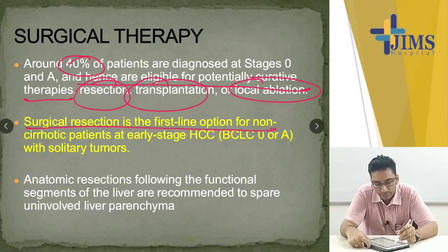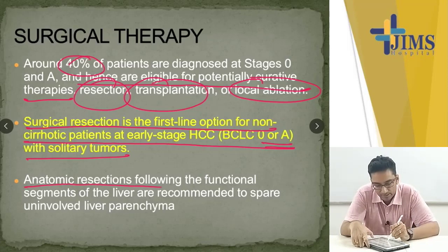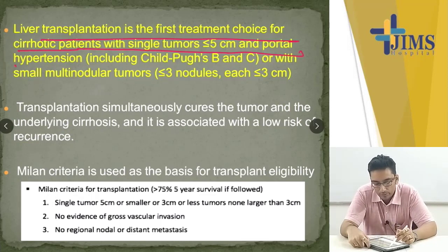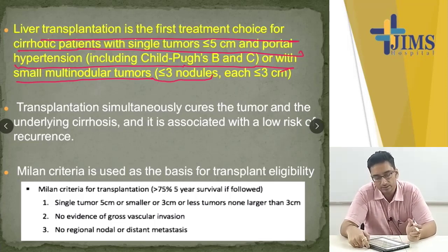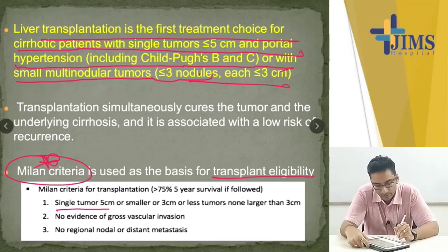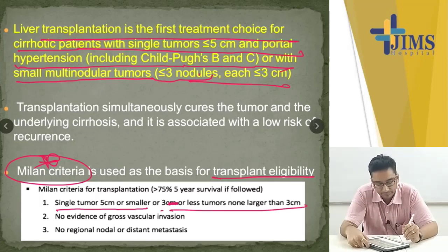Surgical resection is a first-line option for non-cirrhotic patients at early stage HCC — BCLC 0 or A — with solitary tumors. Anatomic resections following the functional segments of the liver are recommended to spare uninvolved liver parenchyma. Liver transplantation is the first treatment of choice for cirrhotic patients with single tumors less than 5 cm with portal hypertension, including Child-Pugh B and C, or with small multinodular tumors — up to 3 nodules each ≤3 cm. The Milan criteria are used for transplant eligibility: single tumor 5 cm or smaller, or 3 or fewer tumors none larger than 3 cm, with no gross vascular invasion and no nodal or distant metastasis.